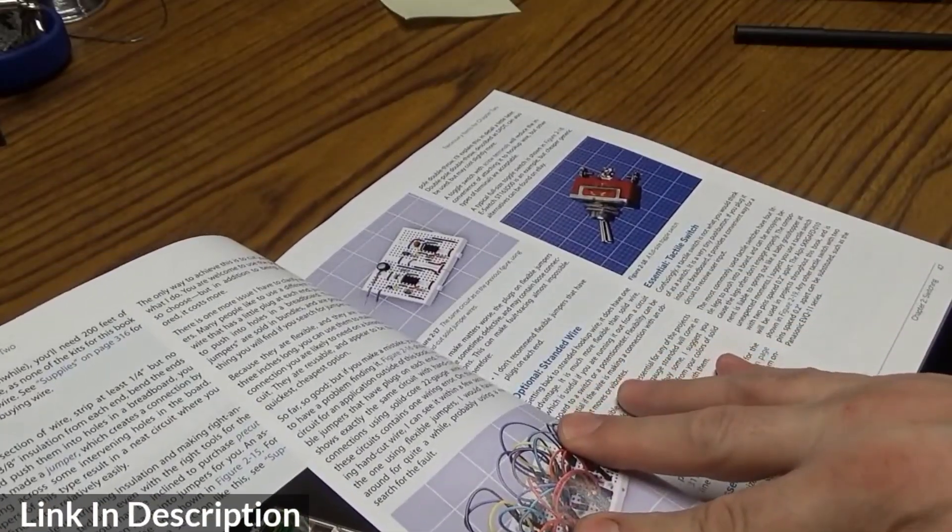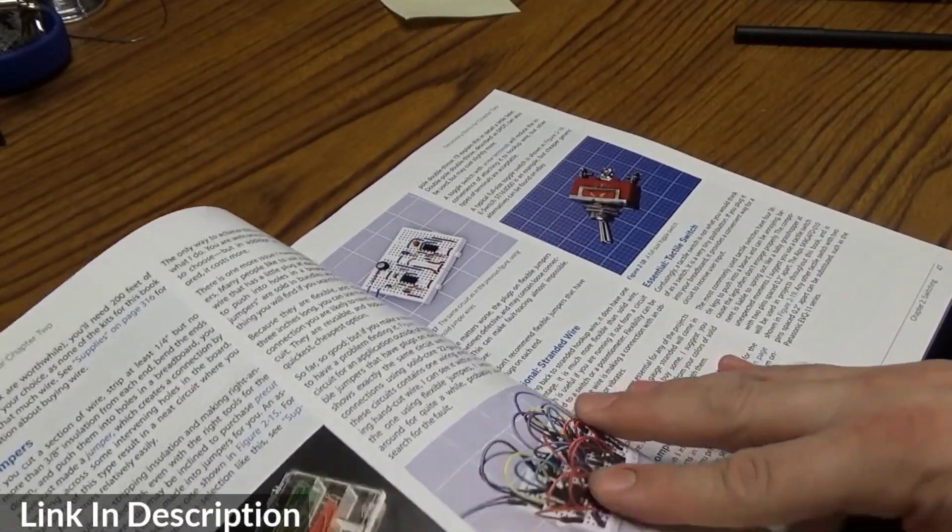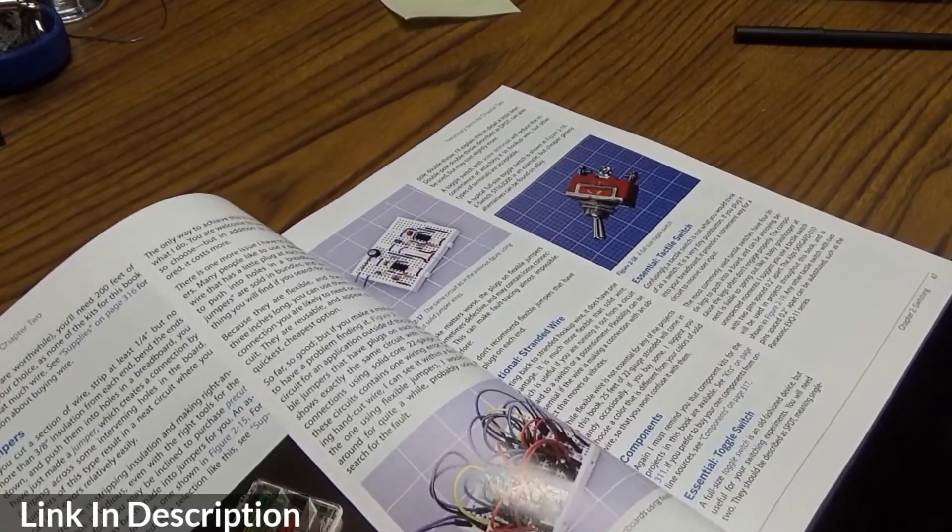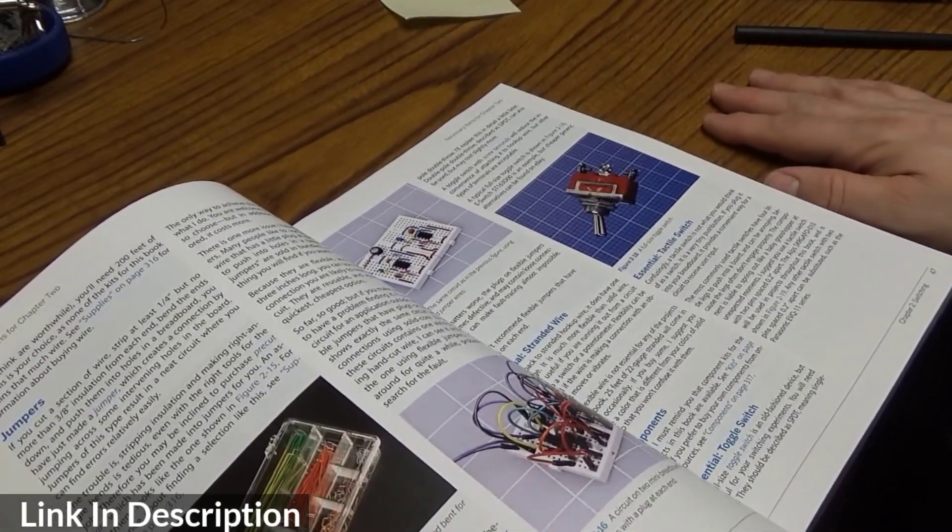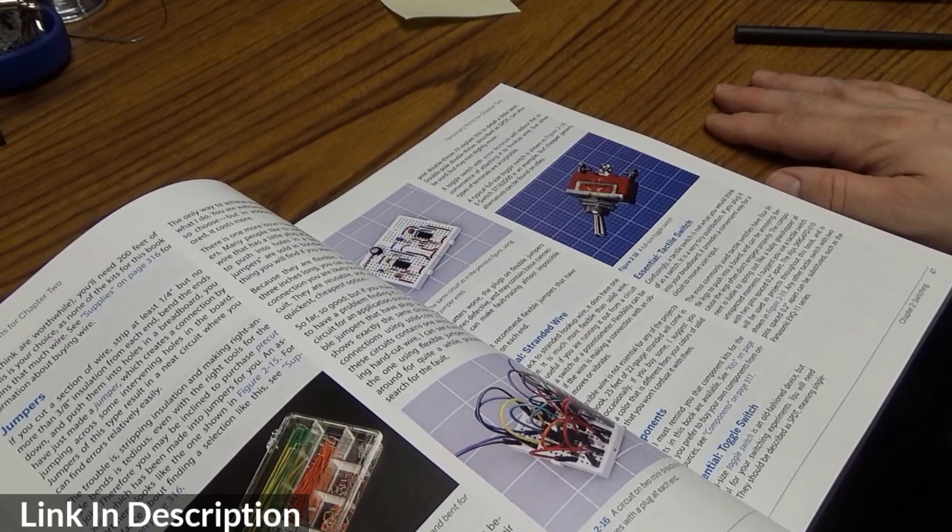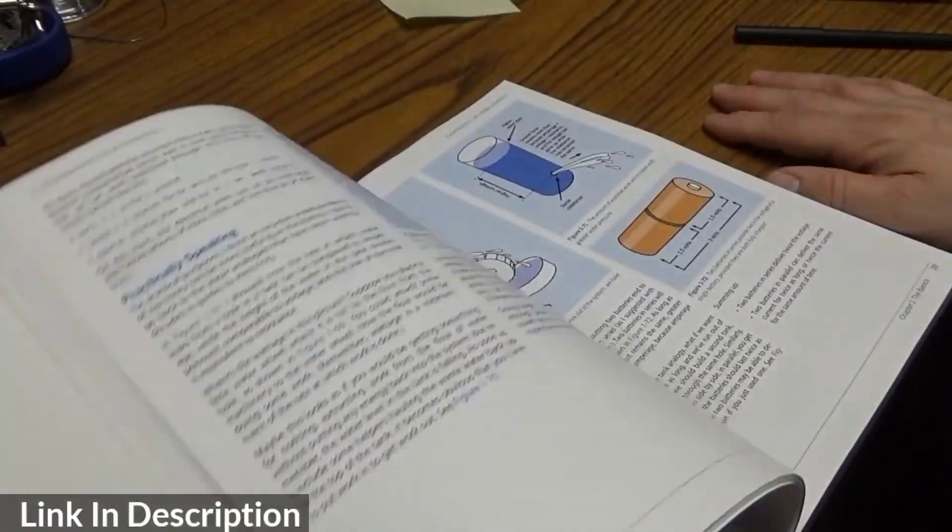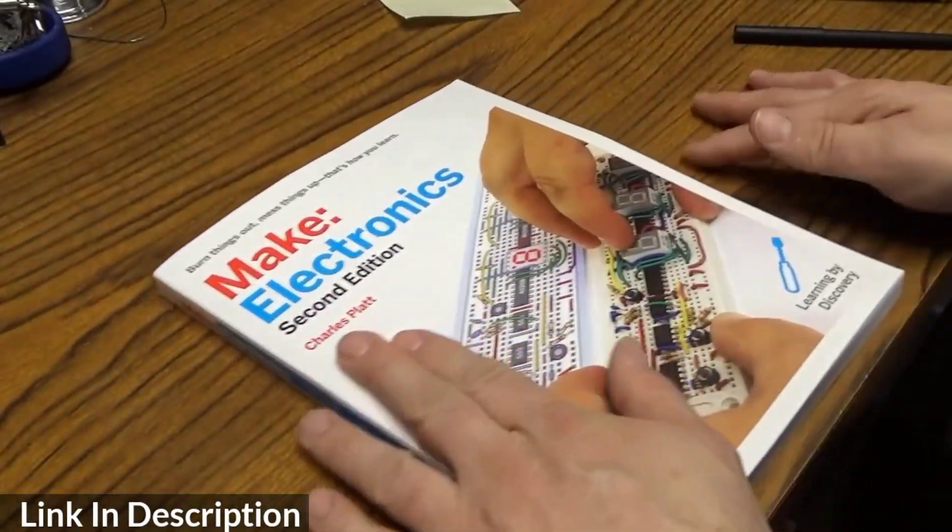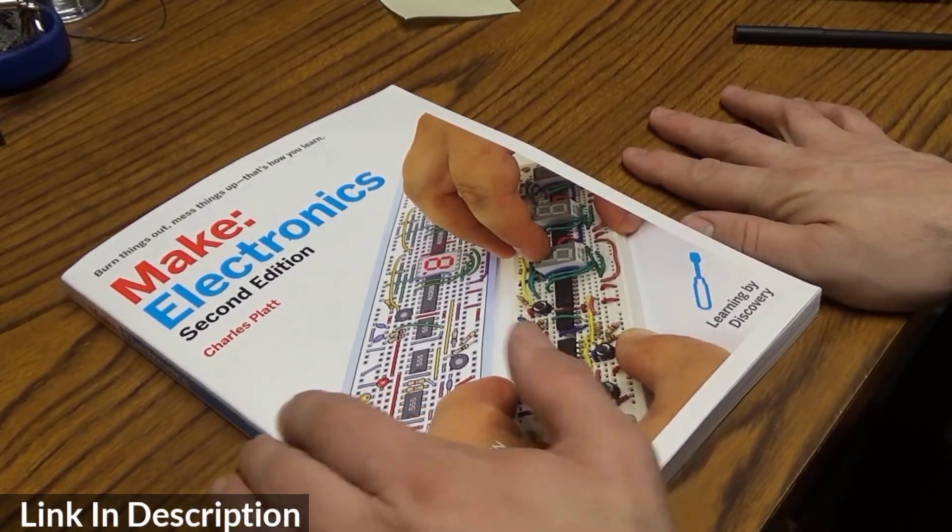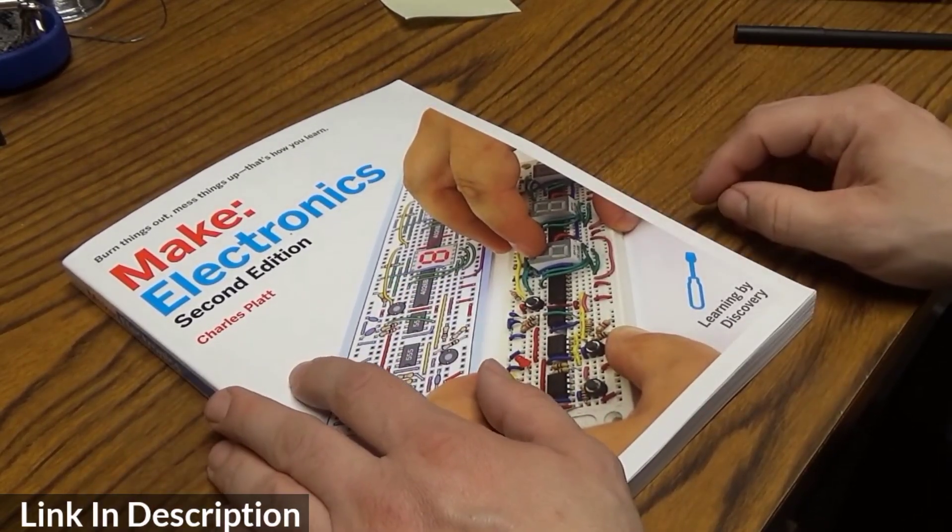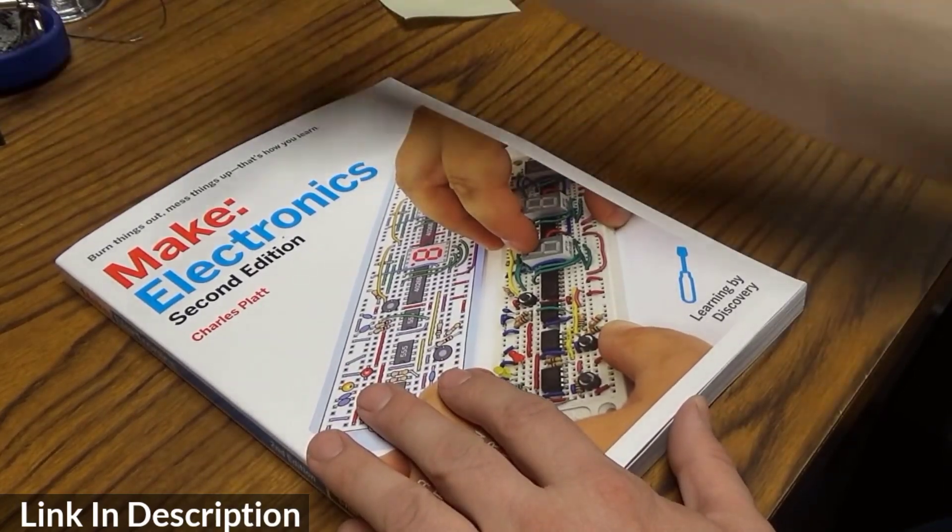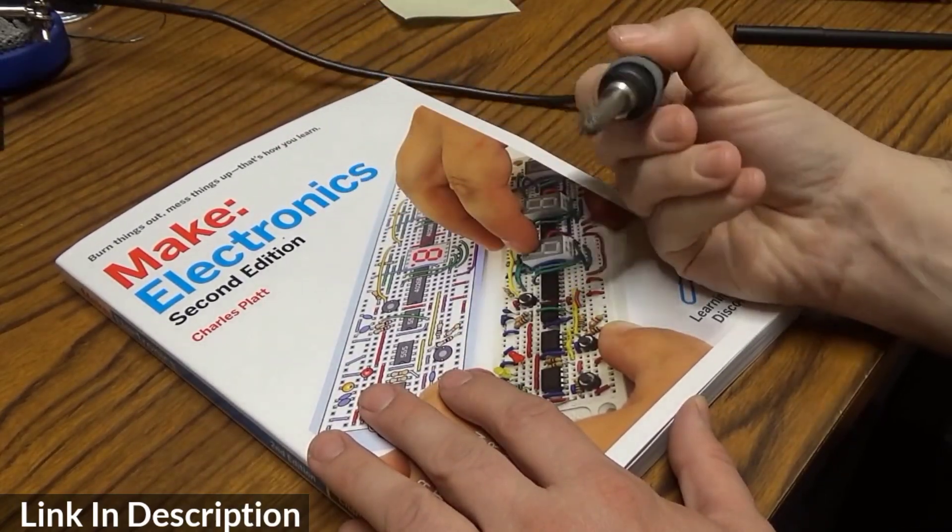I believe there's also a chapter where they show what happens when you overpower LEDs. They even have an experiment where you hook an LED up to a battery, show it's working, and then you touch your soldering iron to it to the point that the LED burns out.